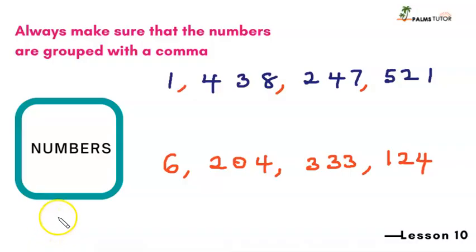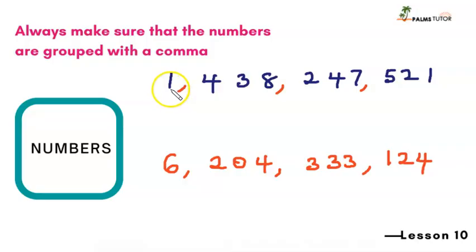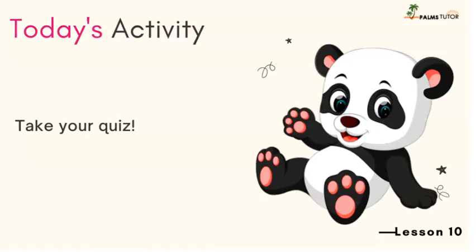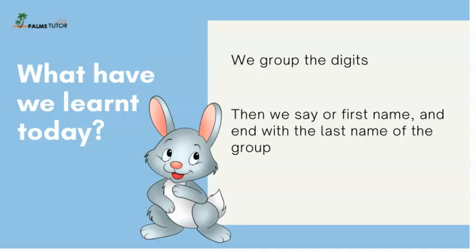So that's it — we just say their names as they appear, giving each digit group its own first name based on which group it belongs to: thousands, millions, or billions. And that's how to write numbers in words. Let's see what Baby Panda has for us today — he says take your quiz. Let's see what we have learned.